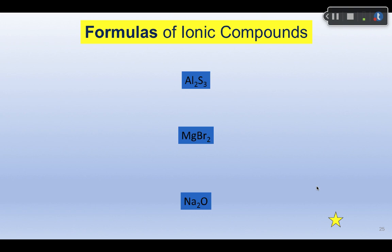So Al2S3 must be aluminum and sulfur. How does it become electrically neutral? Aluminum sits in group 3A or 13, so its charge should be plus 3. Sulfur is in group 6A or 16, so 8 minus the group number gives a charge of minus 2. There are 2 aluminums and 3 sulfurs: 2 times plus 3 is plus 6, and 3 times minus 2 is minus 6, so plus 6 and minus 6 together gives an electrically neutral compound.